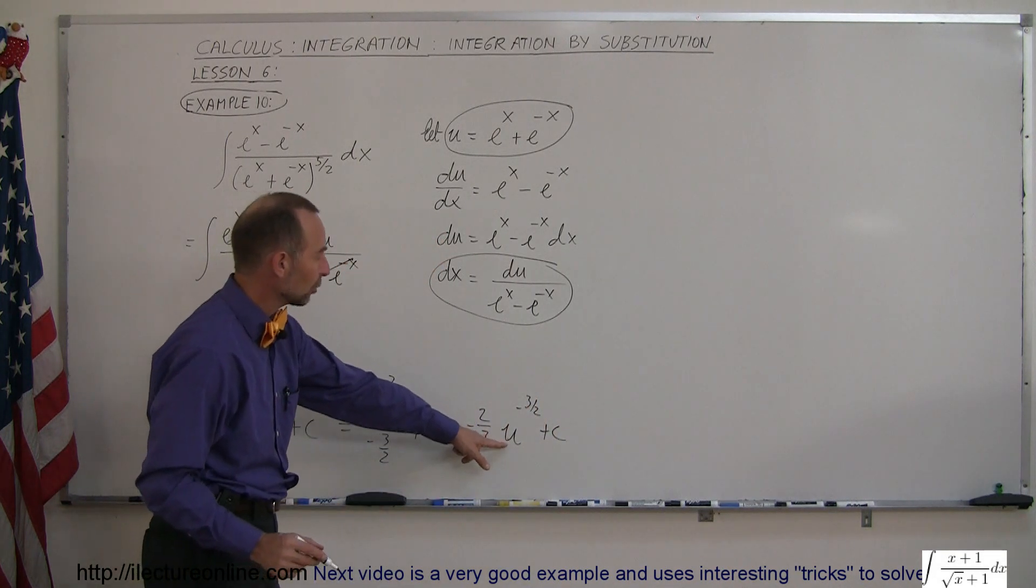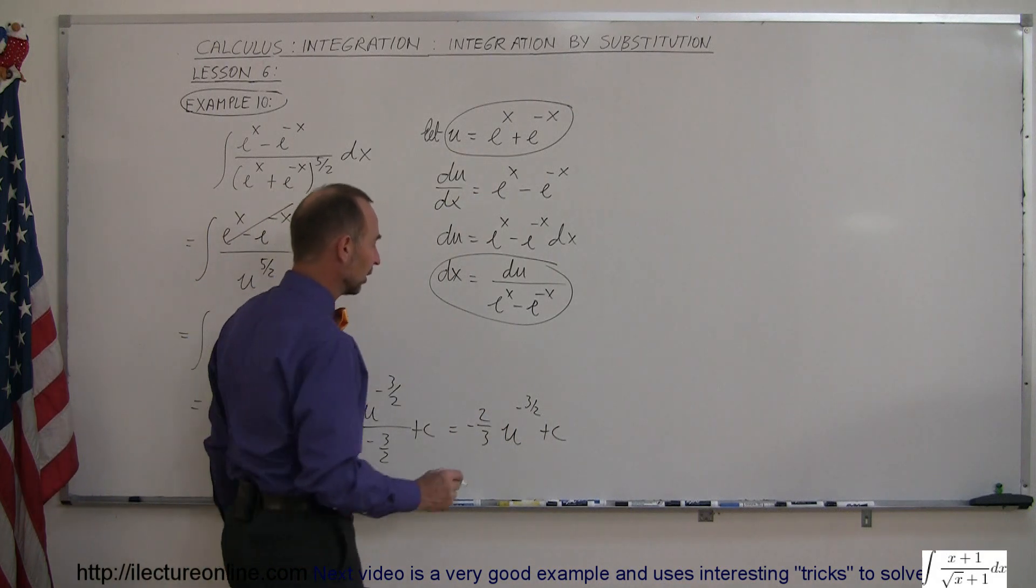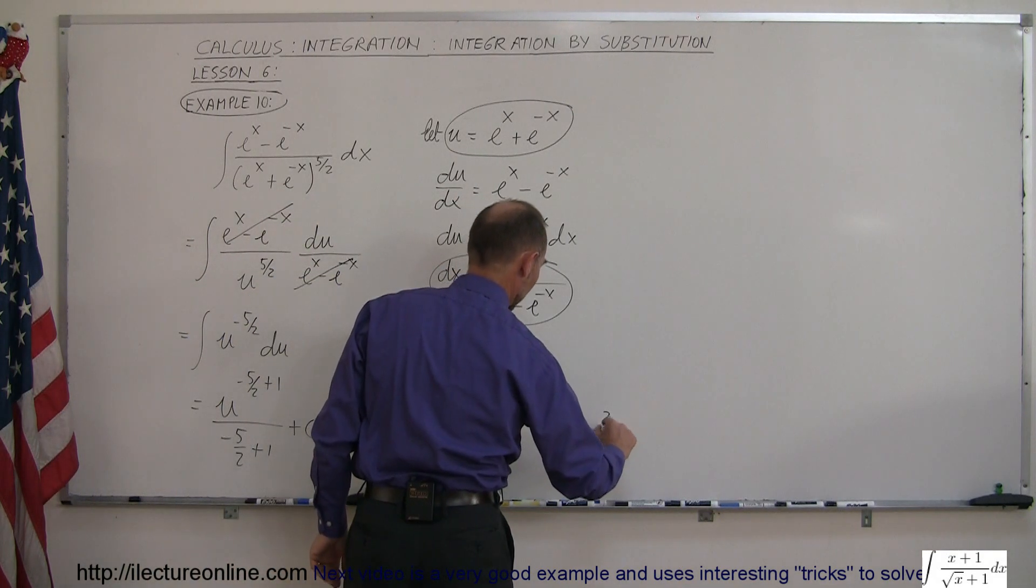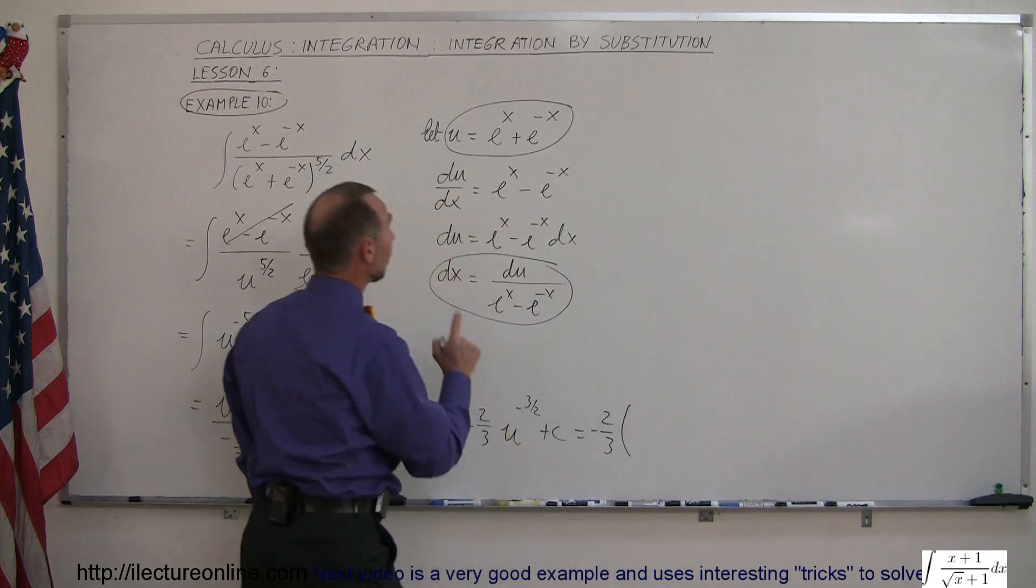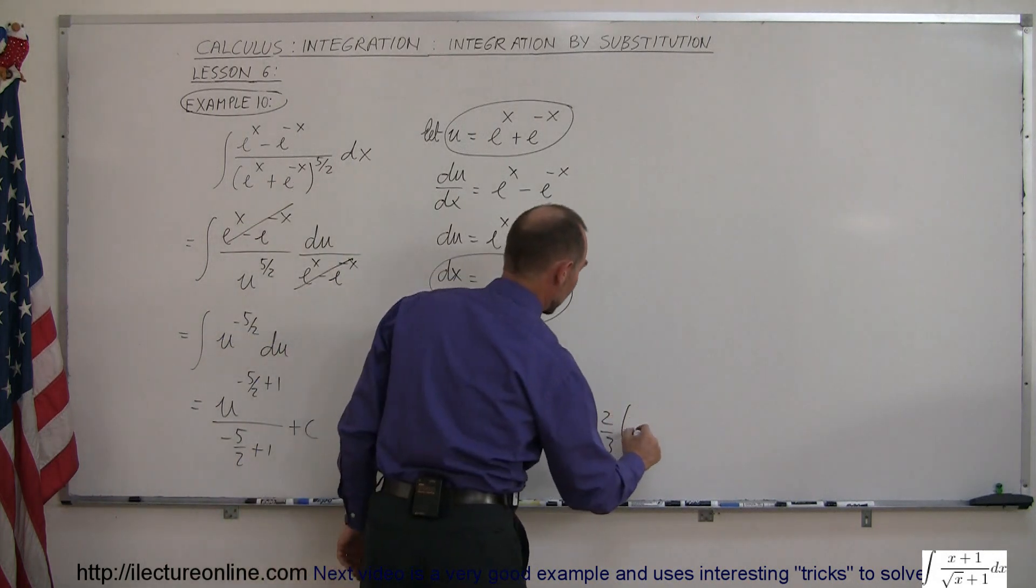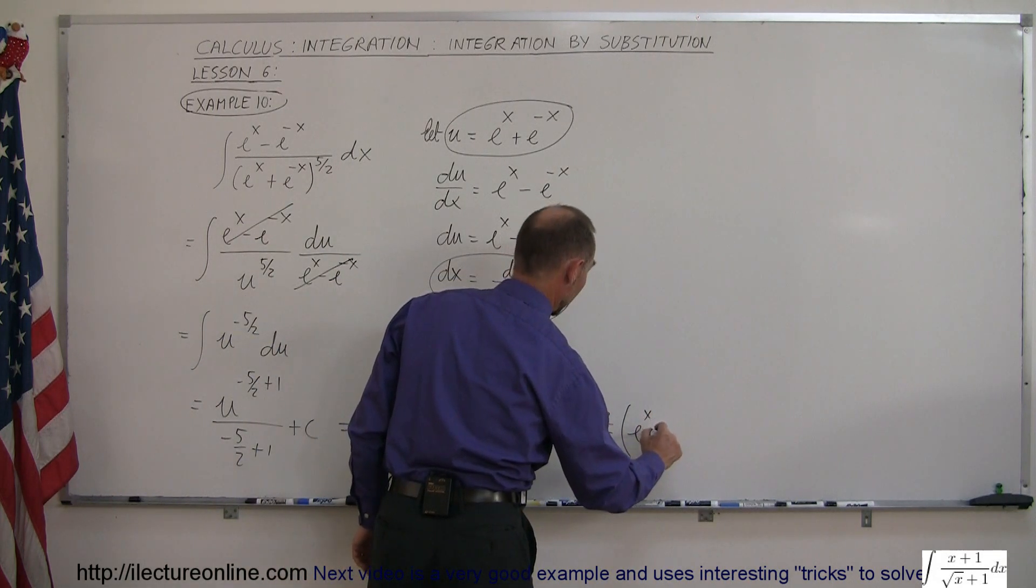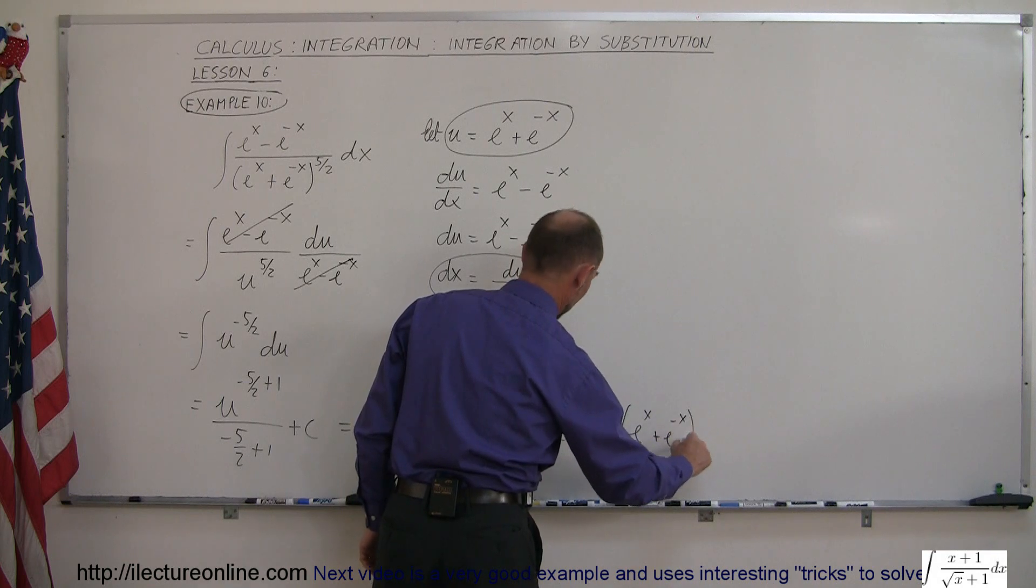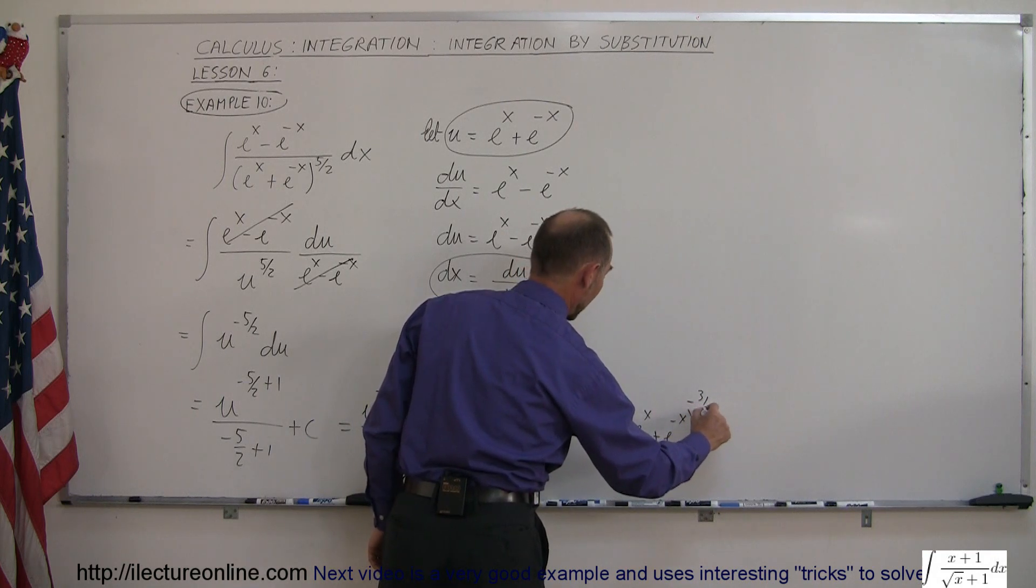And then finally we substitute back in what u is equal to which is this right there, so this is equal to minus two thirds times u which is e to the x plus e to the minus x to the minus three halves power plus c.